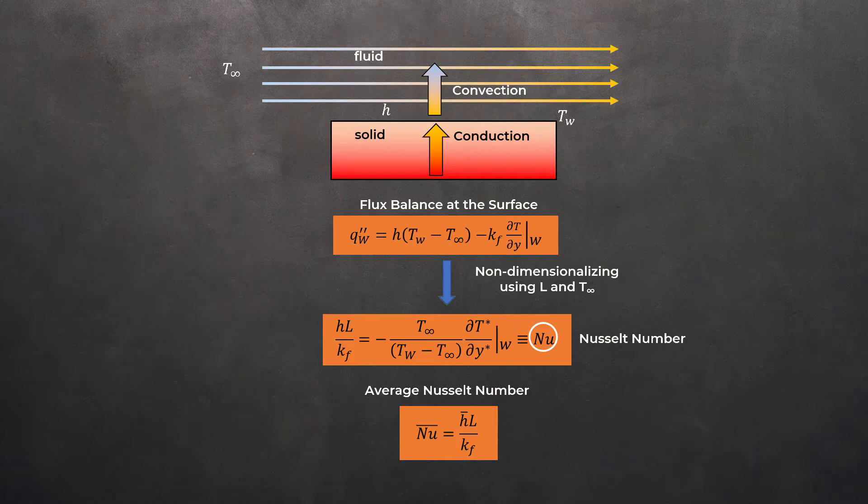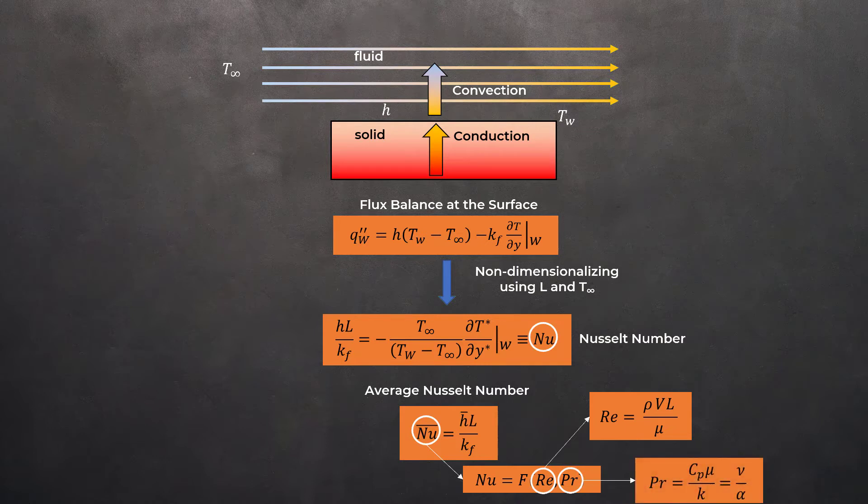Experiments have shown that the Nusselt number correlates with the Reynolds number, which represents the ratio of the inertial to viscous forces in a fluid flow, and the Prandtl number, which represents the ratio of viscous diffusion of momentum to the thermal diffusion in the fluid.